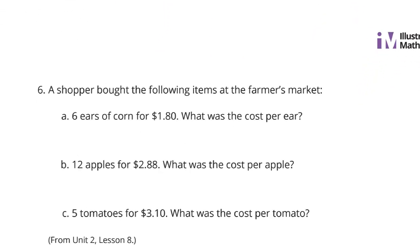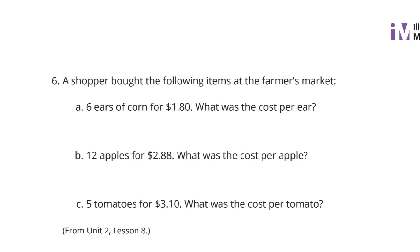Continuing on to question 6. A shopper bought the following items at the farmer's market. 6 ears of corn for $1.80. What was the cost per ear? Well, if we take a look at $1.80 for 6 ears of corn, we want to get this to be equivalent to cost per ear. We need to divide 6 by 6 to get to 1 ear. So if we divide $1.80 by 6, we're going to get 30 cents per ear of corn.